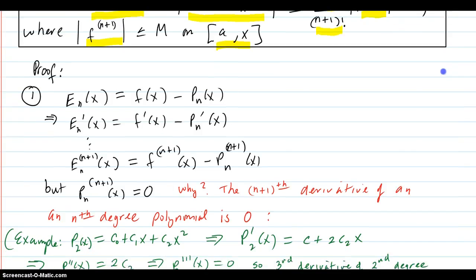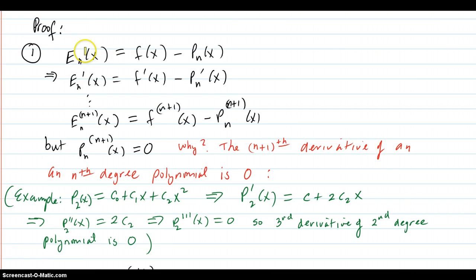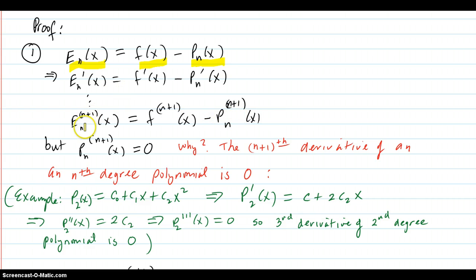Here are the proof steps you need to know for a test. First, the error term is defined as the difference between f(x) and the nth Taylor polynomial at x. If you differentiate that, and take n+1 derivatives, you get down to a key statement.